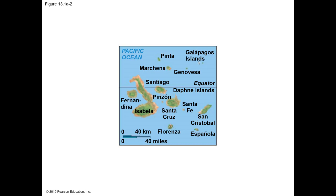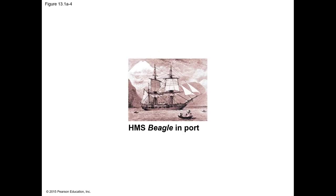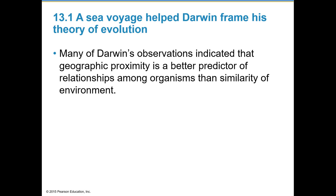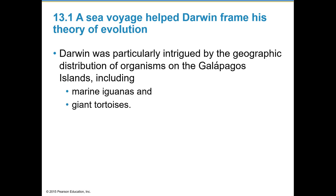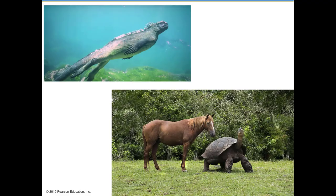Many of Darwin's observations indicated that geographic proximity — being close to one another — is a better predictor of relationships among organisms than similarity of the environment. Darwin was particularly interested in the geographic distribution of organisms on the Galapagos Islands, including the marine iguanas and the giant tortoises, both of which are remarkable creatures.